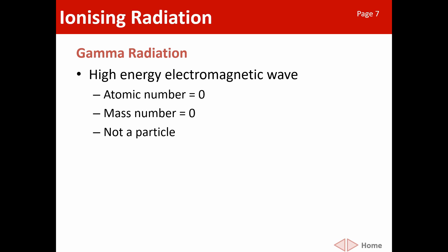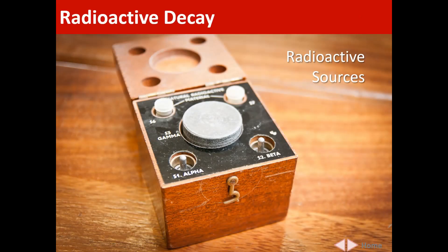The beta particle had a mass number of zero, but it did have a mass. Gamma has no actual mass. We write it down as zero-zero-gamma. In school we normally do experiments using radioactive sources that come in little pots called sealed cup sources.